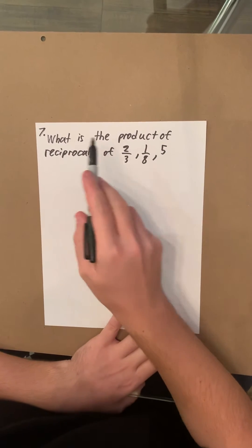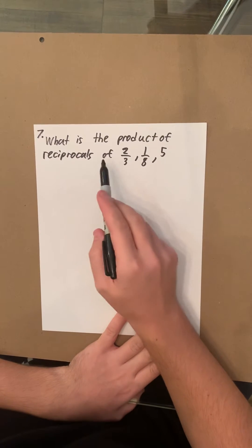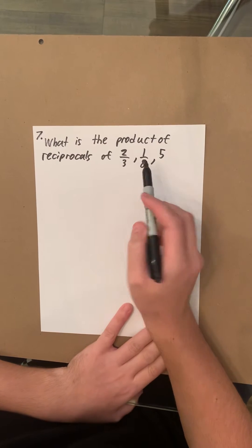So for number seven, it asks what is the product of reciprocals of two over three, one over eight, and five?